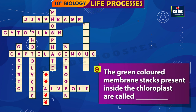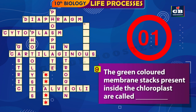9 Down: The green coloured membrane stacks present inside the chloroplast are called dash. The answer is grana. The green coloured membrane stacks present inside the chloroplast are called grana.